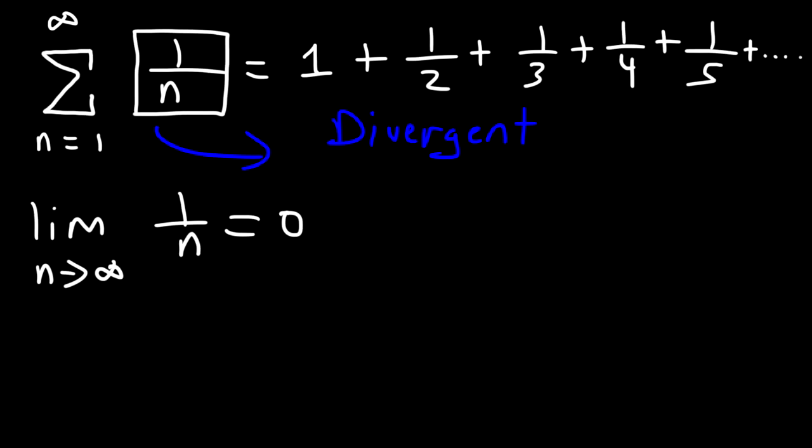For the divergence test to work, if it doesn't equal 0, the limit, then the series diverges. But if it equals 0, it's inconclusive. The series may converge, or it may diverge. So the divergence test won't help us for this example.